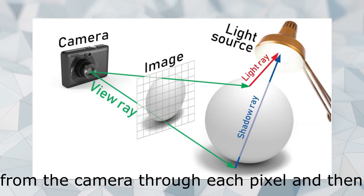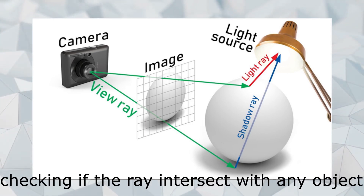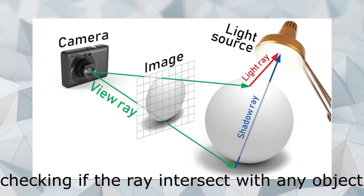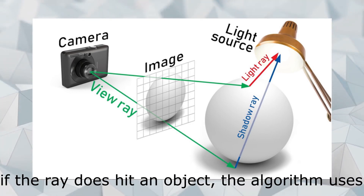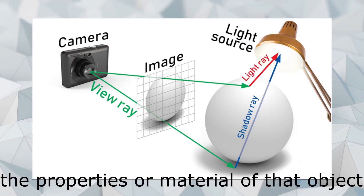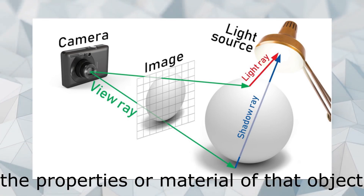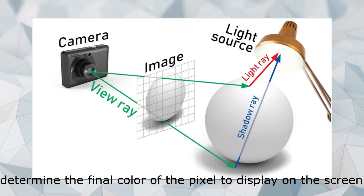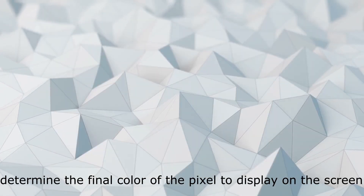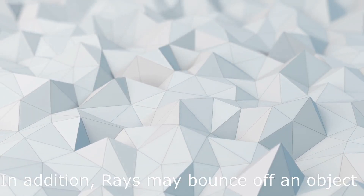This process begins with projecting one or more rays from the camera through each pixel, and then checking if the ray intersects with any object. If the ray does hit an object, the algorithm uses the properties and material of that object and its distance from the camera to help determine the final color of the pixel to display on the screen.